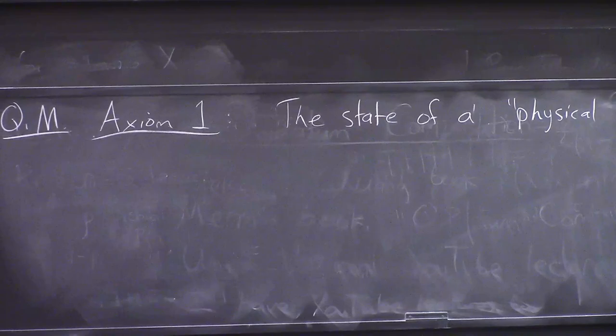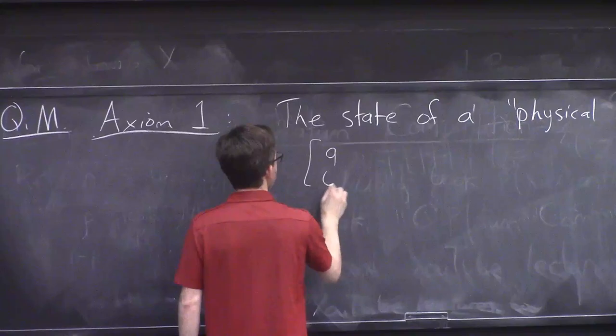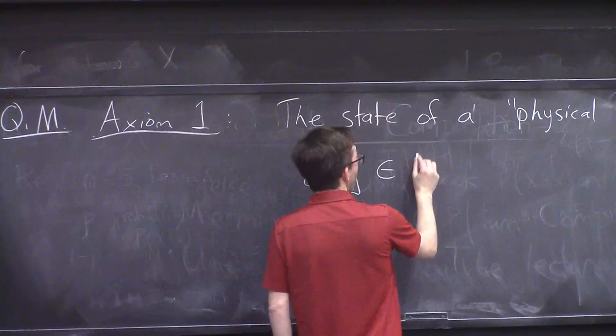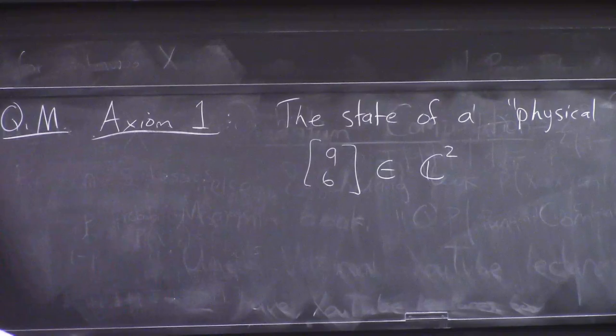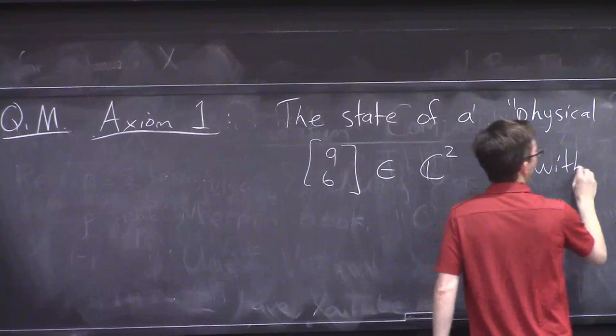A vector in two dimensions looks like this: (a, b). I would normally write R² here, but technically the entries of this vector are allowed to be complex numbers. Don't get too stressed about complex numbers if you don't like them — it's without loss of generality in quantum computation to only worry about real numbers. The fact that it's a unit vector means their squares add up to one.